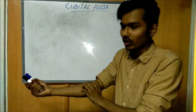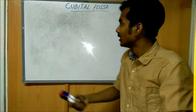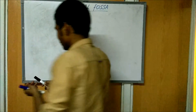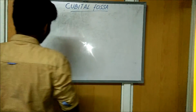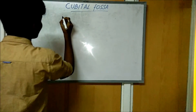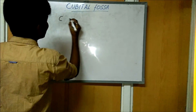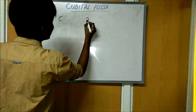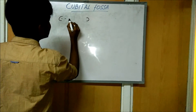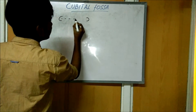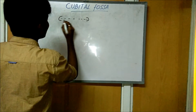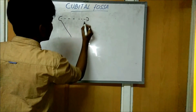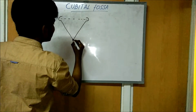It has three borders. Between the lateral epicondyle and the medial epicondyle there is an imaginary line, and it makes a triangular shape.